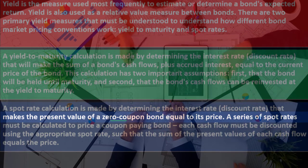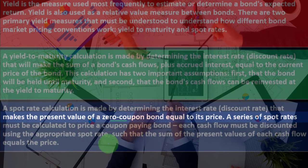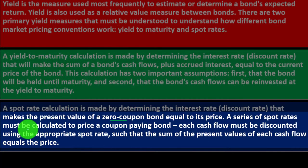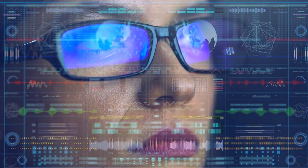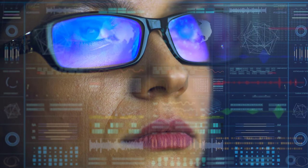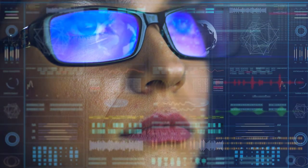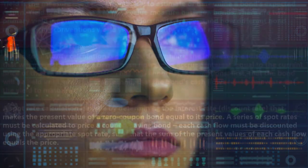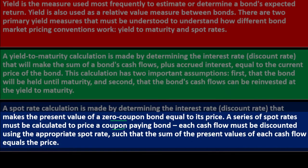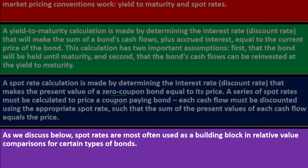For a coupon-paying bond, which has those periodic interest payments, you'll have multiple spot rates because you have multiple points in time in the future for those cash flows. Each cash flow must be discounted using the appropriate spot rate such that the sum of the present values of each cash flow equals the price. Spot rates are most often used as a building block for relative value comparisons for certain types of bonds.